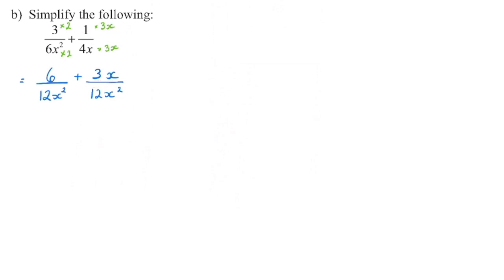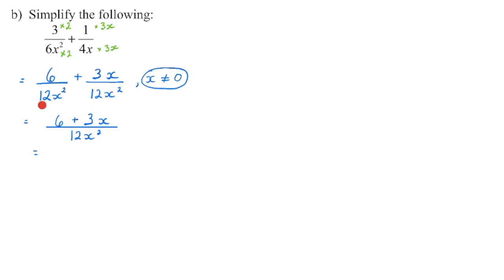So we're going to multiply the numerator by the same value to keep it equivalent — 1 times 3x is 3x. When we go to add fractions, we're going to keep the denominator the same and add the numerators. I'm going to keep my denominator the same and bring those numerators together. The next thing we need to do is figure out what the non-permissible values are. In our denominator, x cannot equal 0. Now we actually need to add and subtract the numerators — I can't combine those together because they're not like terms.